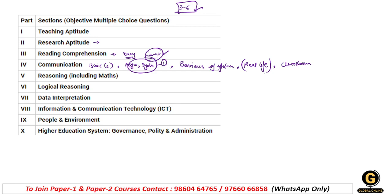Reasoning ki baat karein toh overall students ka yahi kehna hai ki kaafi easy aaya tha - bahut zyada difficult questions nahin puche gaye the. Previous year questions karke jaate ho toh bhi aapko easy ho jaata hai. Mathematics mein jaise hum hamesha bolte hain - percentage, average aur ratio - yeh teen topics agar aap kar lete ho toh reasoning unit ke saath saath data interpretation bhi easy ho jaata hai. Is baar bhi sab students ne kaha ki previous year questions kar lijiye, bahut easy reasoning aaya tha.